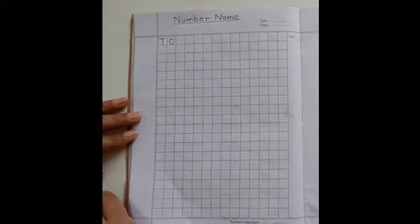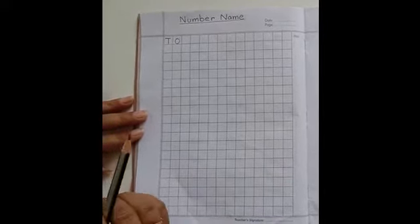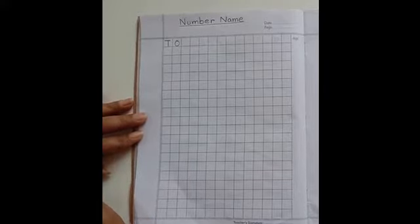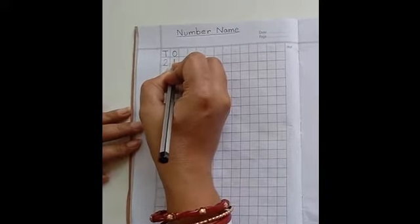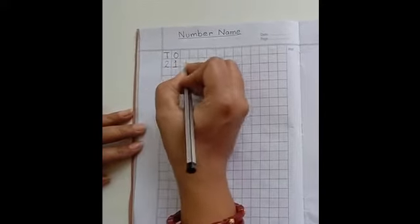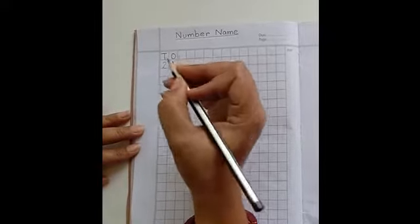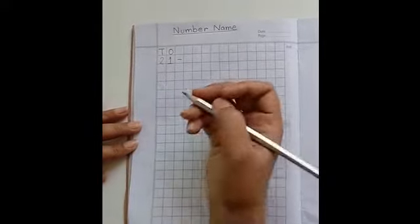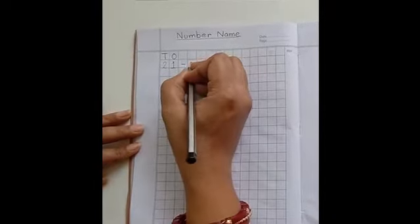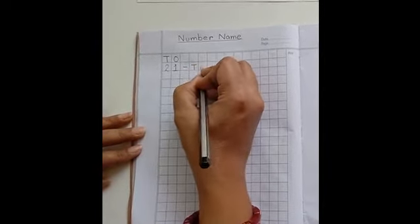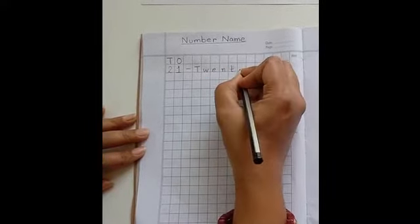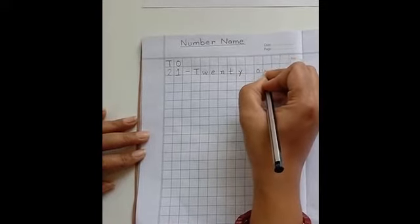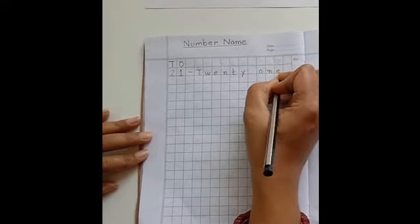Children, now let's learn and write number names from 21 to 30. 21 - for that, first of all, we will write 20 and then 1. T-W-E-N-T-Y, 20, O-N-E, 1. 21.